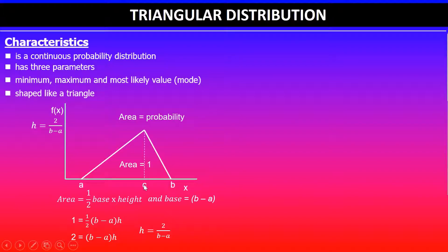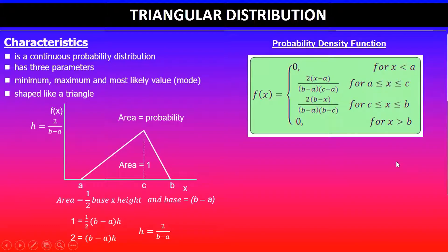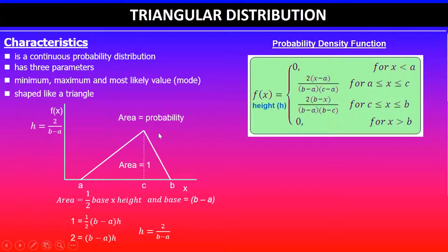That maximum height occurs at c, the mode value where the triangle peaks. We'll look at the probability density functions for different heights within this triangle. This formula is given on your formula sheet in the assessment, so you don't need to memorize it. The function f(x) gives you the height of the triangle anywhere between a and b, and at c the height is 2 / (b − a).